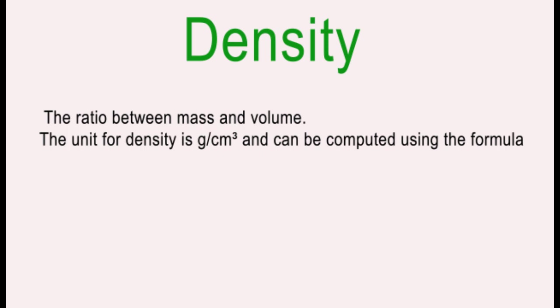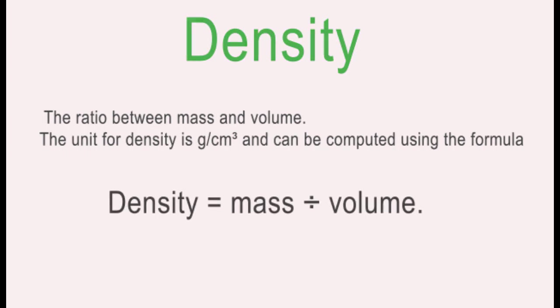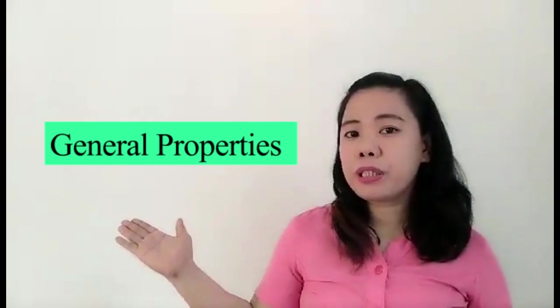The unit for density is gram per cubic centimeter and can be computed using the formula density is equal to mass divided by volume. These properties of materials which are present in all forms, whether it is solid, liquid, or gas, is what we call general properties.